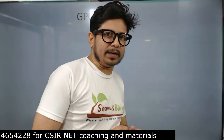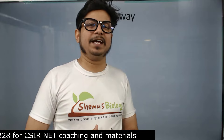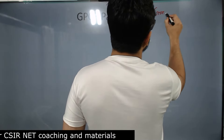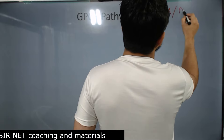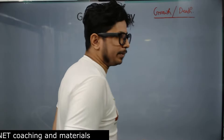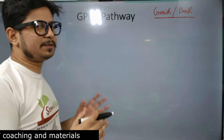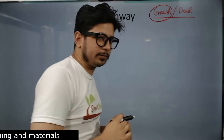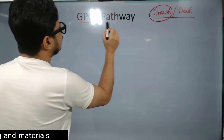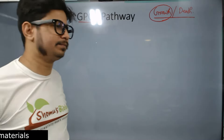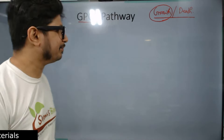Remember, all the types of pathways that we are going to study are either related to the growth of the cell or related to the death of the cell. So whenever I am assessing a pathway, first I will tell you whether this pathway follows the growth or death pathway. GPCR pathways are related to ultimately the growth and proliferation of the cell — division of the cell.